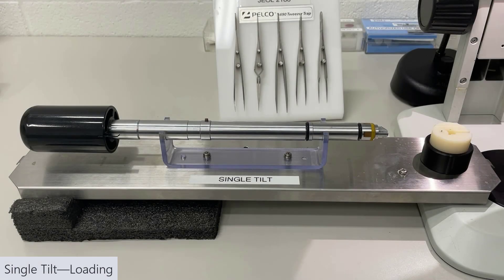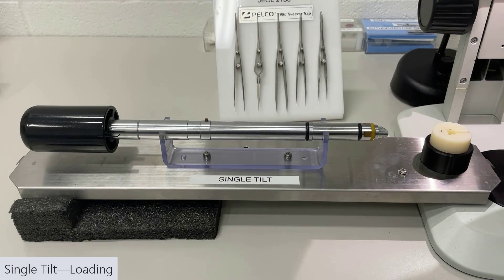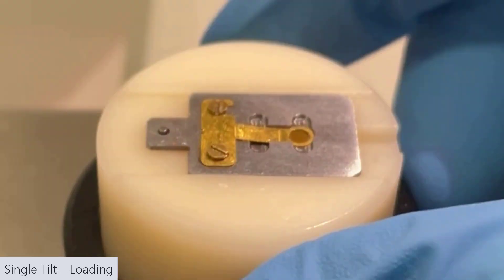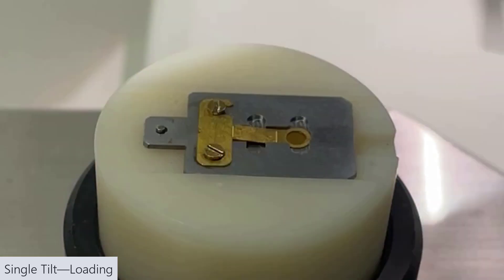First, let's start with the single-tilt holder. This one only tilts in the X direction and is good for most samples for imaging. Here's our holder. In some cases, we do take the blade off. So if your lab does that, this is the process you'll use. Put your blade in the little holder.